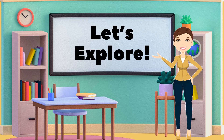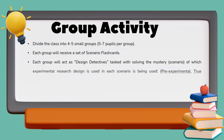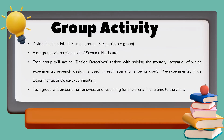Let's explore! We'll delve into our lesson through a group activity. The class will be divided into five groups with five to seven pupils. Each group will receive a set of scenario flashcards and act as design detectives, tasked with solving the mystery of which experimental research design is used in each scenario. Each group will read their flashcards, determine the design type, and present their answers and reasoning to the class. The group with the highest score wins the title of top design detectives.